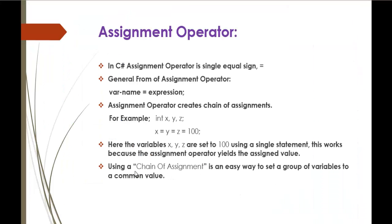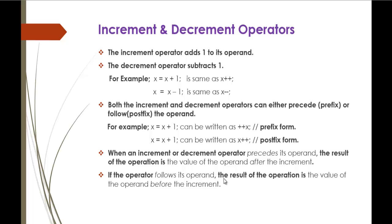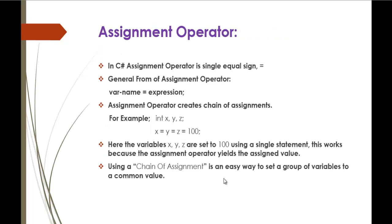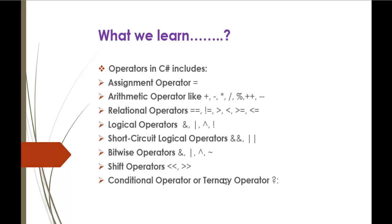We will jump back into the presentation. The main advantage of the assignment operator is it creates a chain of assignment — it is an easy way to set a group of variables to a common value. Next, we move to arithmetic operators. Arithmetic operators in C# include addition, subtraction, multiplication, division, and special operators: the modulus operator, increment, and decrement operator. I will skip the first four and jump directly into the last three — modulus, increment, and decrement operator.